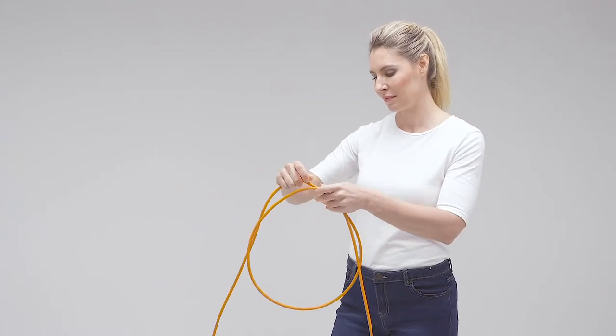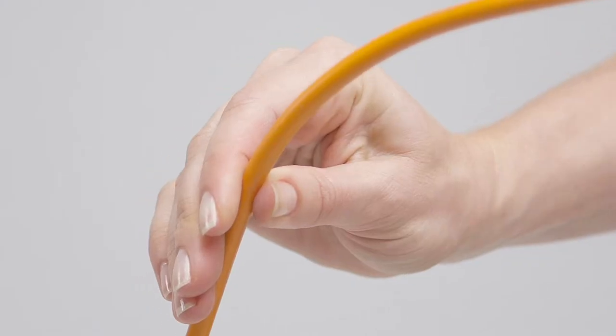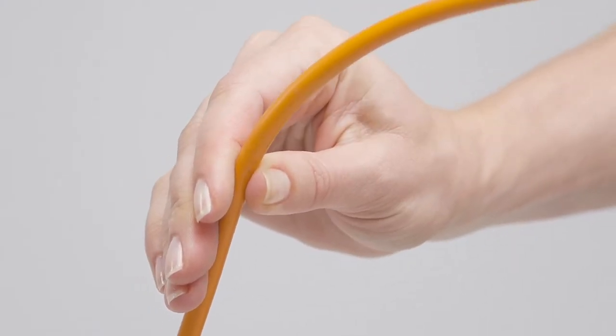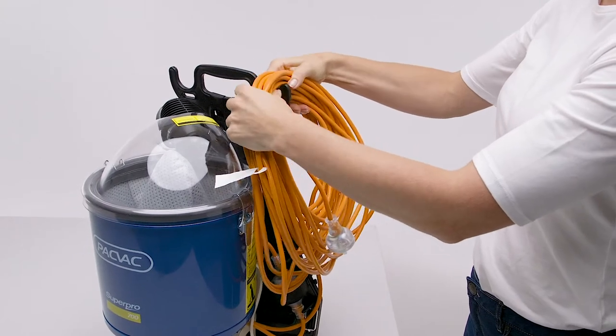Always wind up the power cord from the machine end to ensure the twists and kinks are removed. A good way of doing this is to untwist the cord with your fingers to straighten the extension lead as you gather it up. Never wrap up the cord from the plug end.